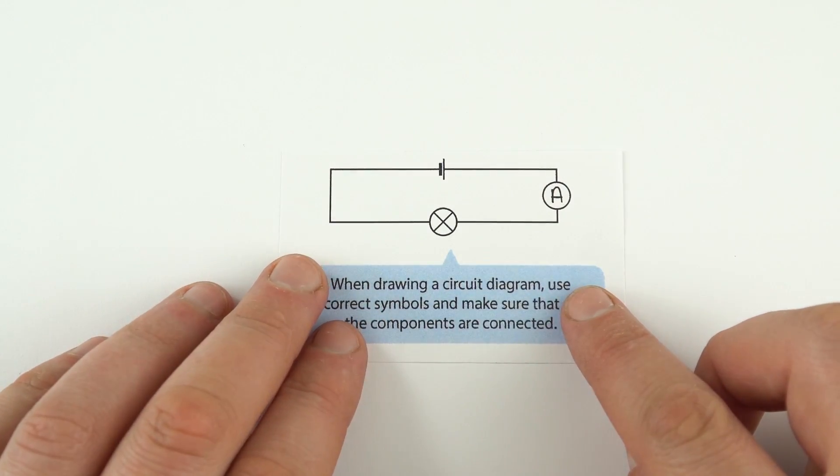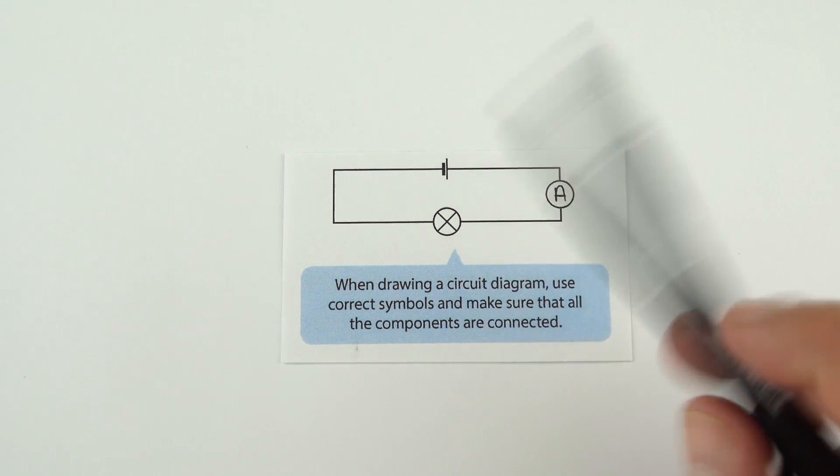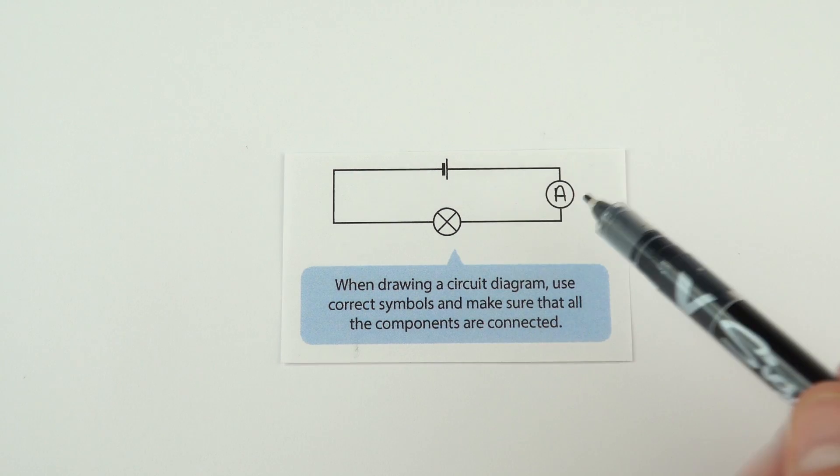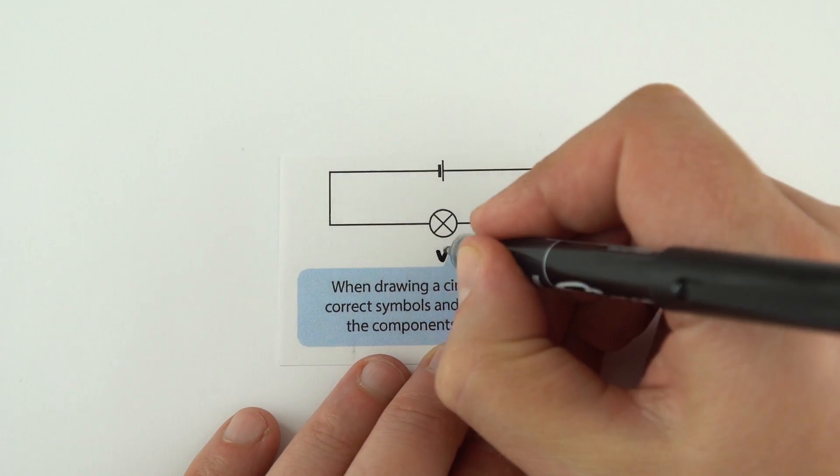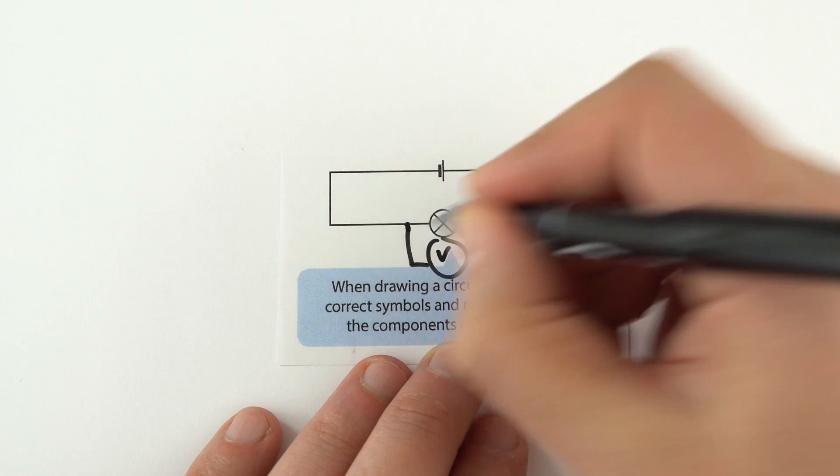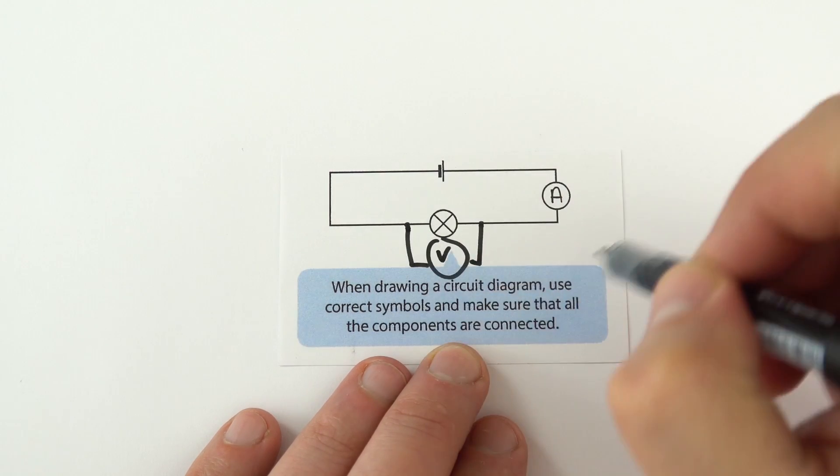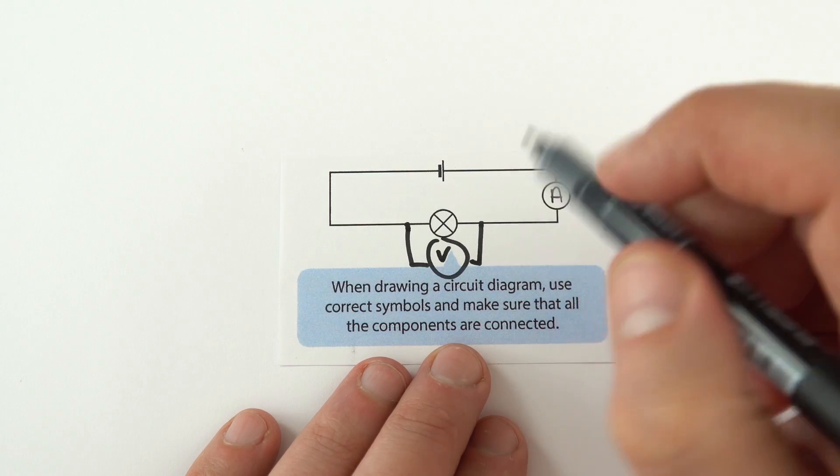Pretty straightforward. If you're going to draw a circuit, use the correct symbols and make sure that all the components are connected. So don't leave gaps. Also, you've got to remember that an ammeter goes in series. If you had a voltmeter, a voltmeter would go in parallel across a component. You don't need to use a ruler necessarily to draw your circuit diagrams, but you do need to make sure that everything is connected up.